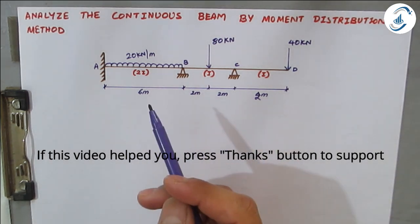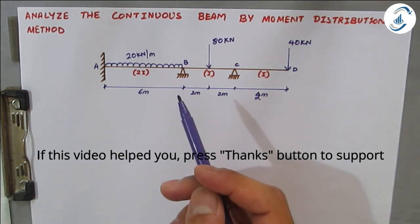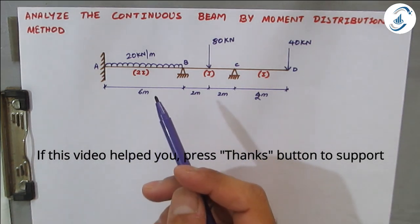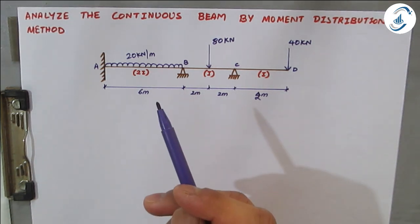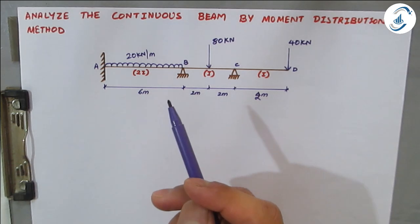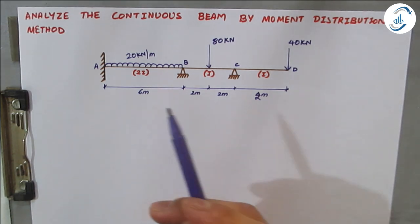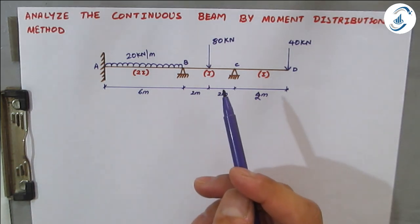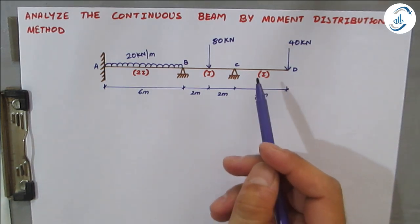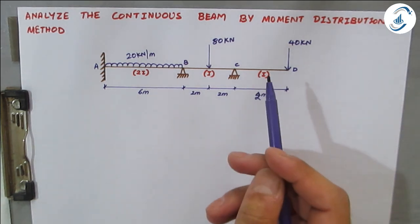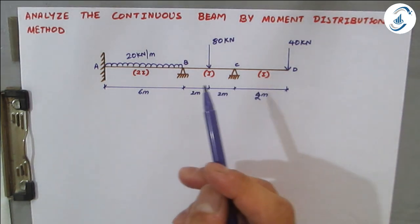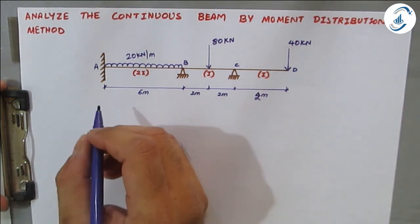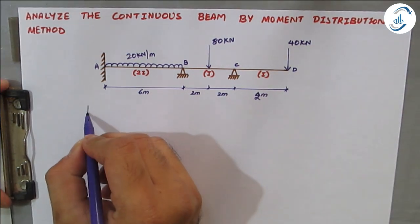The steps remain the same: first, find fixed end moments with respect to the loading condition, then find distribution factors, then complete the moment distribution table. There will be a small correction for the overhang in the distribution table itself.